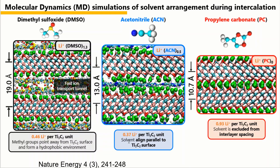In acetonitrile, only 0.37 lithium ions are present per Ti₃C₂ unit. Due to the smaller interlayer spacing, only one layer of solvent is allowed. The solvent molecules align parallel to the Ti₃C₂ surface and block ion transport, explaining the worst performance and largest resistance in this system. In the case of PC, full desolvation occurs. With such a small interlayer space, no solvent is allowed between the layers. Full desolvation allows dense packing of lithium ions between MXene layers, and hence almost two times the charge can be stored in Ti₃C₂ compared to the other two systems.